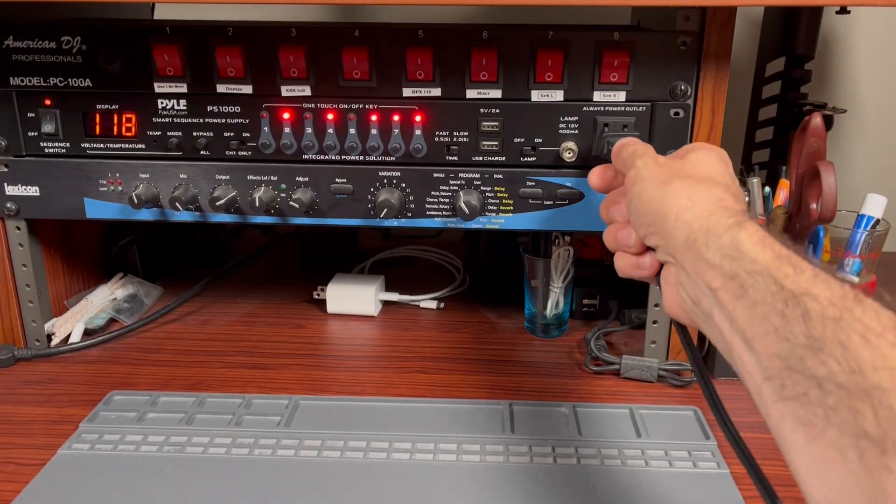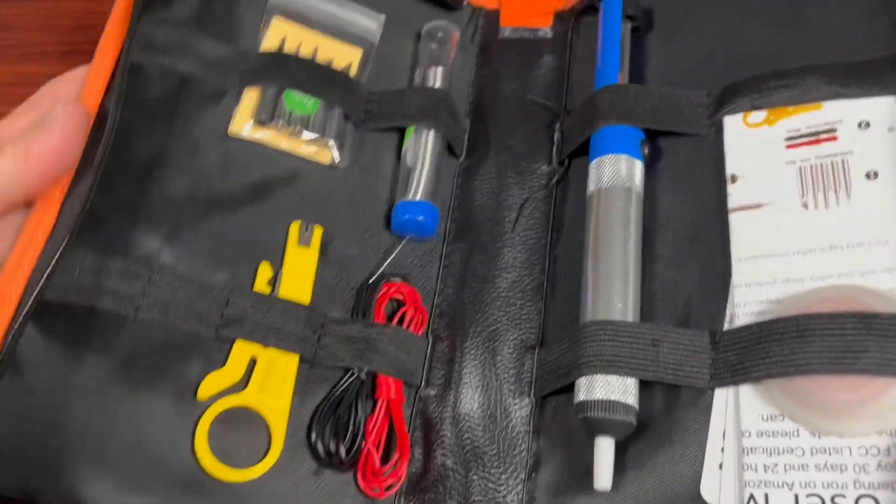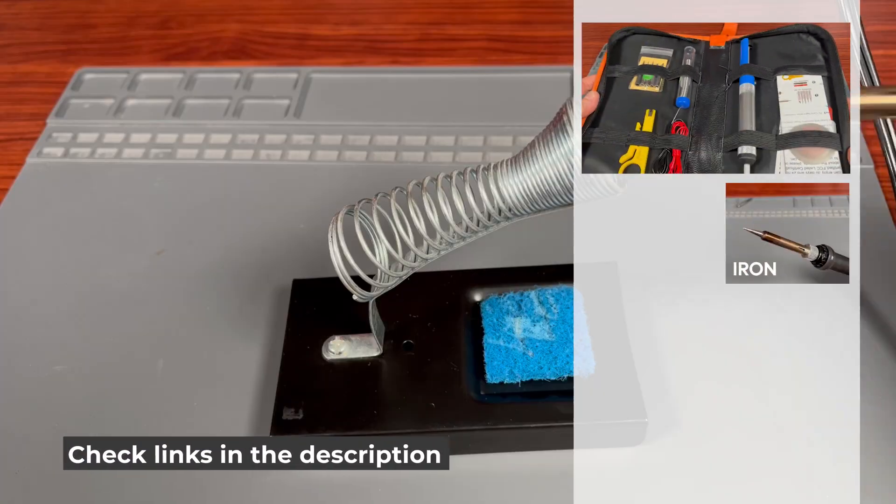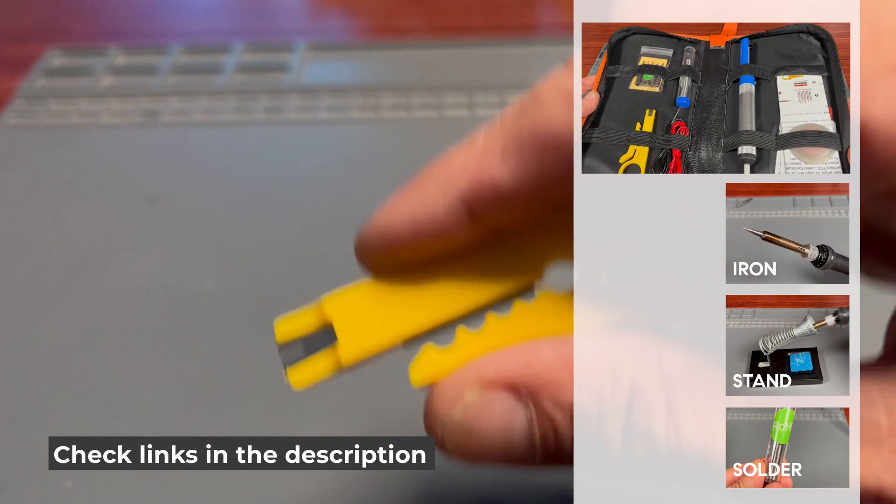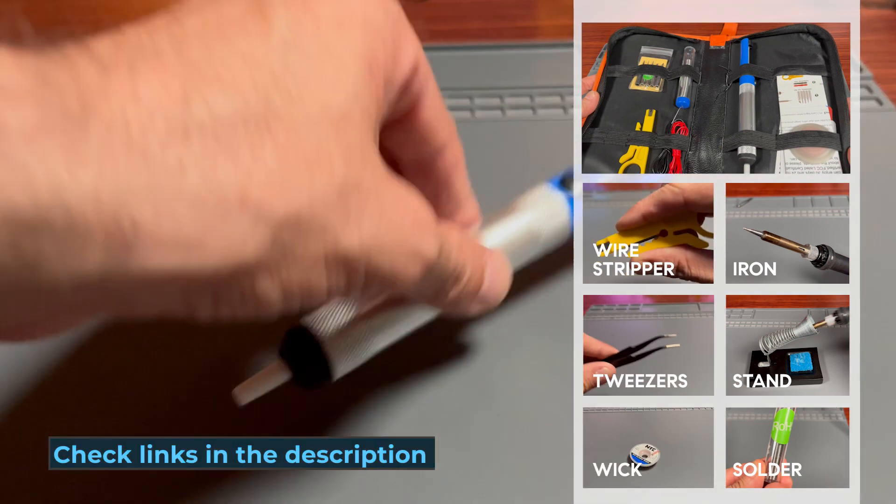Before we jump into the action, let's quickly run through what you'll need. A soldering iron kit. This one comes with the iron, holder, solder, wire stripper, tweezers, and more. Check the link in the description.